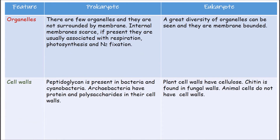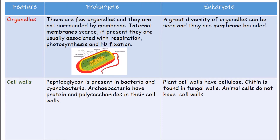There are only a few organelles in prokaryotic cells, and they are not membrane-bounded. Mitochondria, endoplasmic reticulum, Golgi apparatus, and vacuoles are absent. Internal membranes, when present, are infoldings or extensions derived from the cytoplasmic membrane, usually associated with respiration, photosynthesis, and nitrogen fixation.